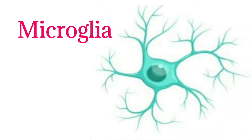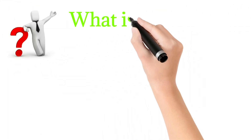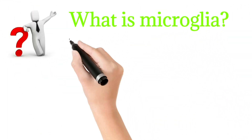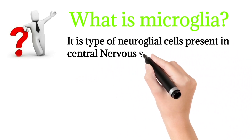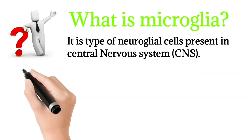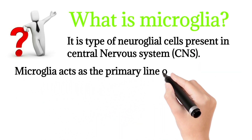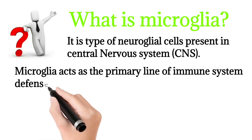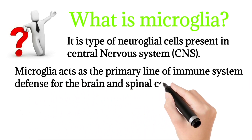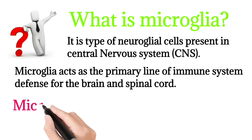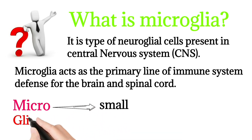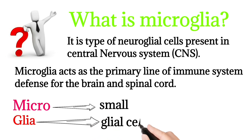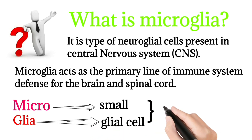Today we'll talk about microglia. Microglia is a type of neuroglial cell present in the central nervous system. It also acts as a primary line of immune defense for the brain and spinal cord. The name means small glial cells — micro means small — and it is the smallest of all the glial cells.